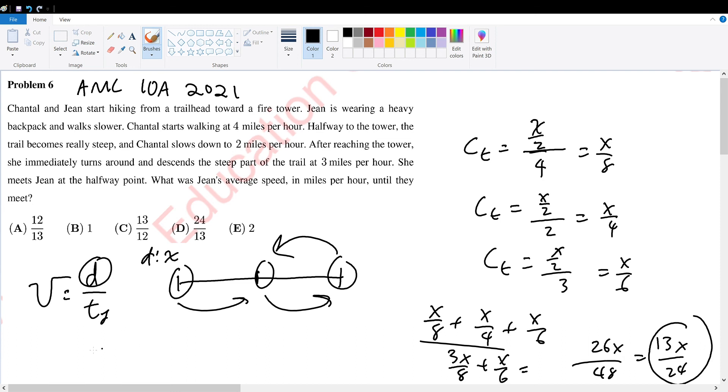So therefore, the velocity, the average velocity of Jean would be the distance she traveled x over 2 divided by her time, which is 13x over 24. Simplify, x over 2 times 12, or 24, over 13x. x and x gets cancelled, we simplify, this becomes 12, which is equal to 12 over 13, and brings us to answer choice A.